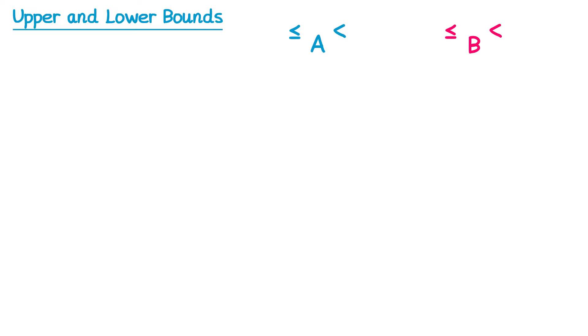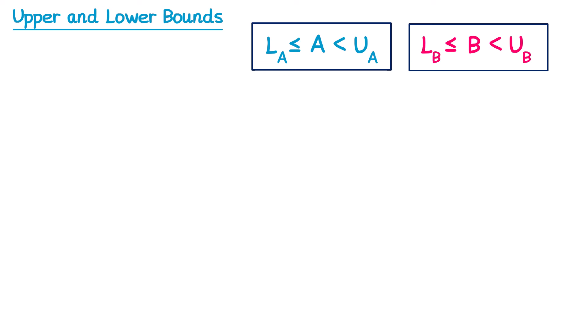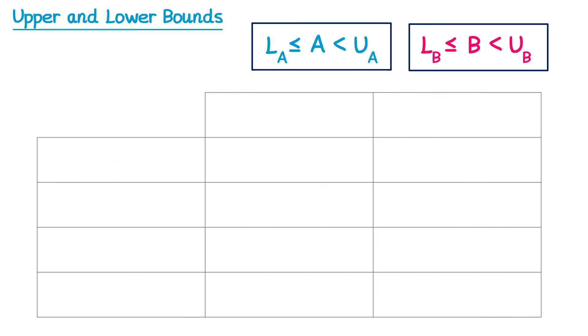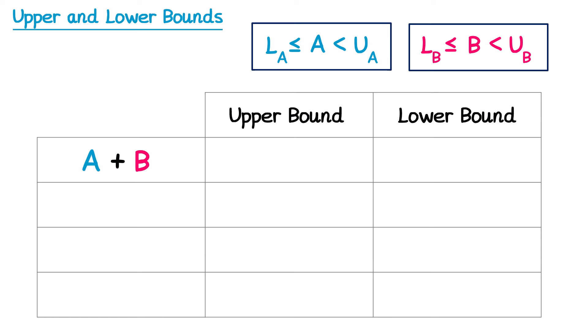Let's say we had two numbers — we'll call them a and b — with error intervals. The lower bound of a is la, the upper bound of a is ua, and similarly lb and ub for b. For a plus b: the upper bound is ua + ub, and the lower bound is la + lb. For a multiplied by b: the upper bound is ua × ub, and the lower bound is la × lb. So whenever you're adding or multiplying, finding the upper and lower bounds is fairly straightforward.